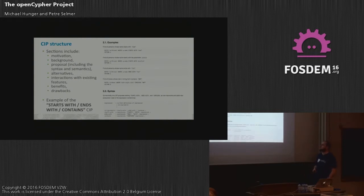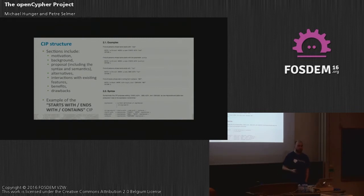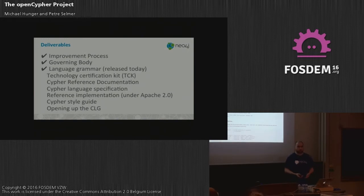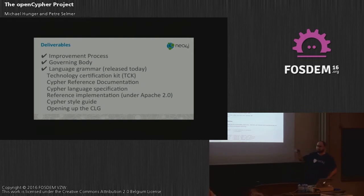The CIP is written in AsciiDoc — it's textual markup, pretty nice to read and write. It includes: motivation and background — why you want this change; the actual proposal with syntax and semantics; alternatives that already exist; impact on the existing language; and pros and cons of the proposal. Here's an example of the starts-with text-based support CIP — pretty straightforward, and things like substring stuff could easily end up in something similar.